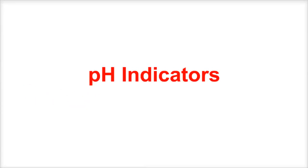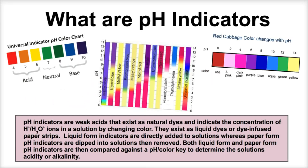Hey you guys, this is Mr. Millings and today we're going to talk about pH indicators. So what are pH indicators and how do they work? pH indicators are weak acids that exist as natural dyes and indicate the concentration of hydrogen ions or hydronium ions in a solution by changing colors. You can basically think of pH indicators as substances that change color when exposed to certain levels of hydrogen ions or hydronium ions.